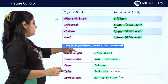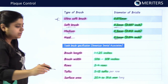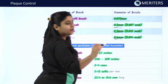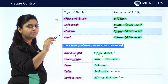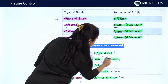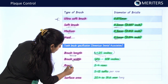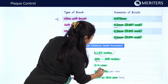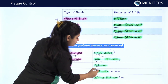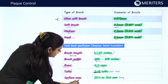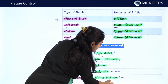The ADA has given specifications for designing a toothbrush. The brush length should be 1 to 1.25 inches. The width should be between 5/16 to 3/8 inches. Tufts should be arranged in 2 to 4 rows, with 5 to 12 tufts in each row. The surface area of the brush head should be between 25.4 to 31.6 mm long.